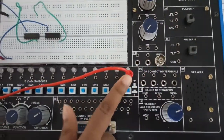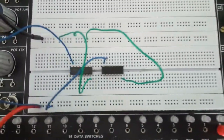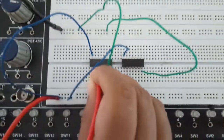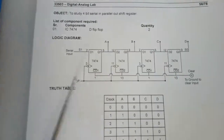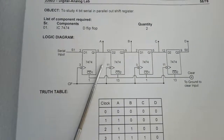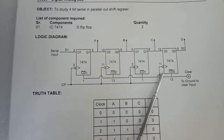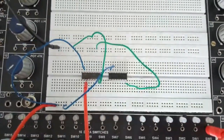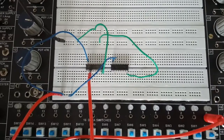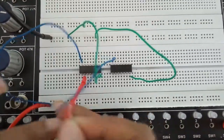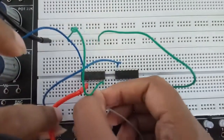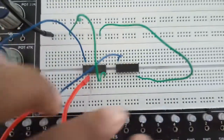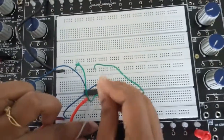Connect the serial input from a data switch to pin number 2 of the first IC. Give block pulse input to pin number 3 and 11 of the first IC and pin number 3 and 11 of the second IC. First, short pin number 3 to pin number 11.